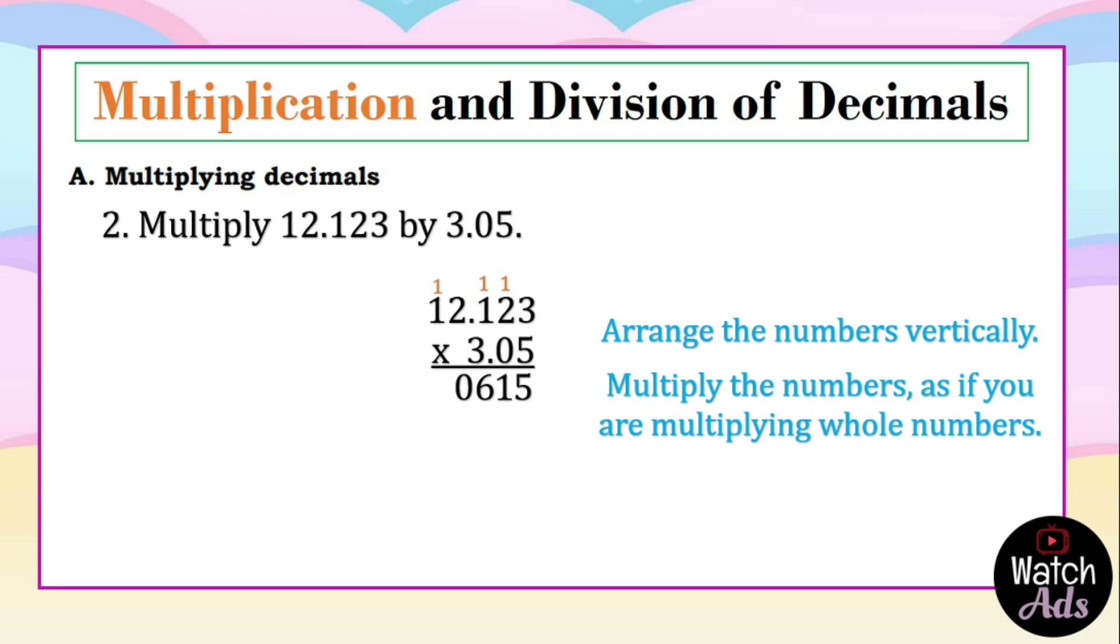Now 0 multiplied by any number gives us 0, so we put 5 zeros. Next, 3 multiplied by 3 is 9, 3 times 2 is 6, 3 times 1 is 3, 3 times 2 is 6. Again, 3 times 1 is 3. And then we add the numbers. We bring down 5. 1 plus 0 is 1. 6 plus 9 is 15, we have 5 carry 1. Now 1 plus 6 is equal to 7. 6 plus 3 is equal to 9. 6 and 3.